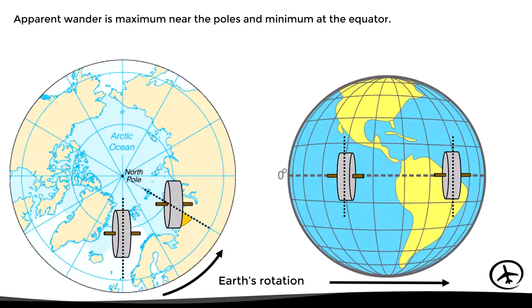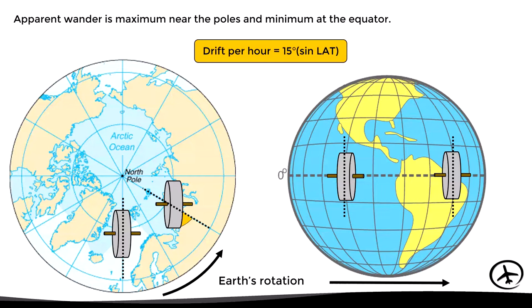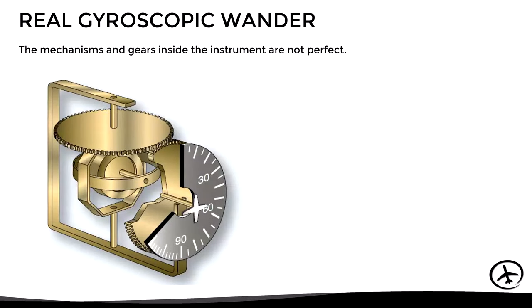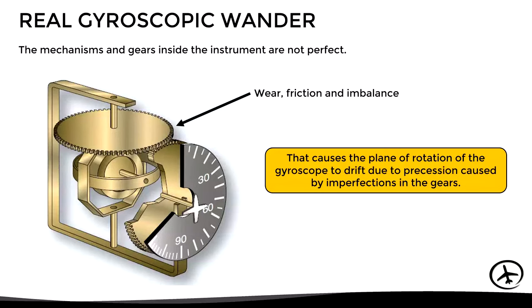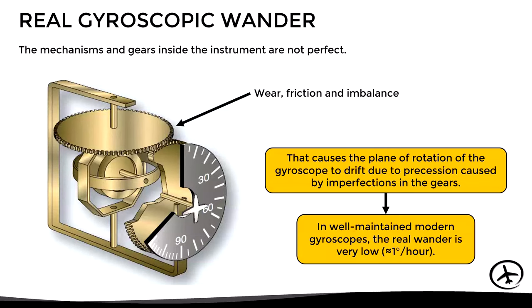The magnitude of apparent wander depends on latitude and can be determined by a specific formula. This wander is called 'apparent' because it is not the gyroscope that drifts, but Earth's rotation that creates the effect. There is also real wander, produced because the mechanisms and gears inside the instrument are not perfect — they suffer from wear, friction, and imbalance that cause the plane of rotation to drift due to precession. However, in well-maintained modern gyros, real wander is very low, around one degree per hour.